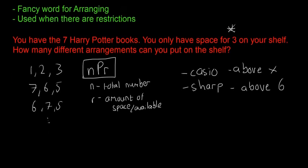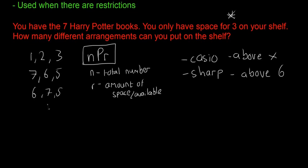For this example, we put it into the calculator. We have n, the total number of books, equal to 7, and r, the amount of space available, equal to 3 because there's only space on the shelf for three. So we would say 7P3, put that into our calculator, and we find that the answer is 210 different arrangements are possible.